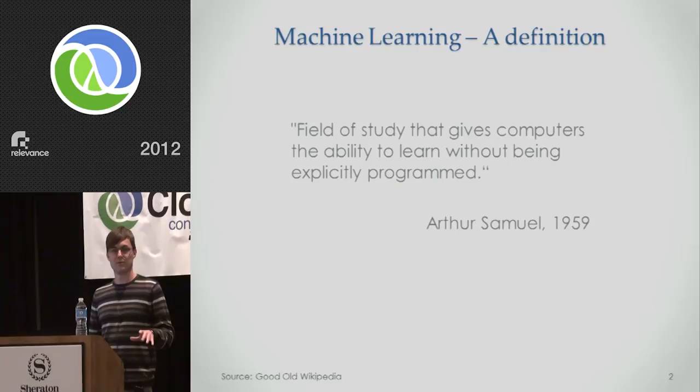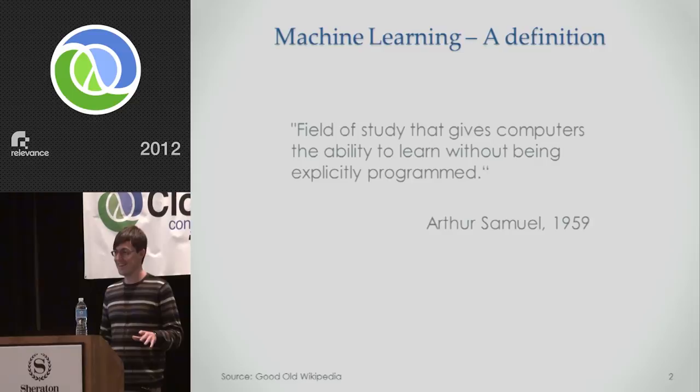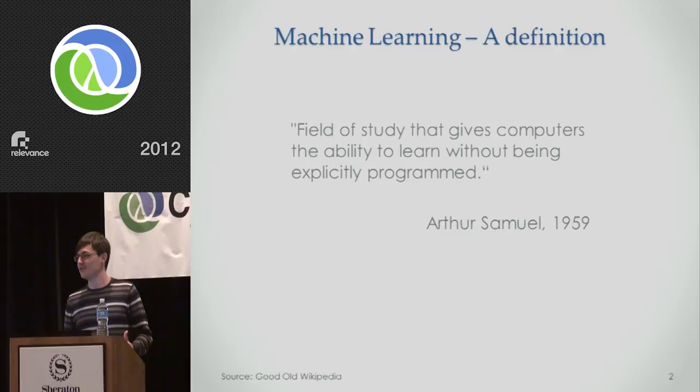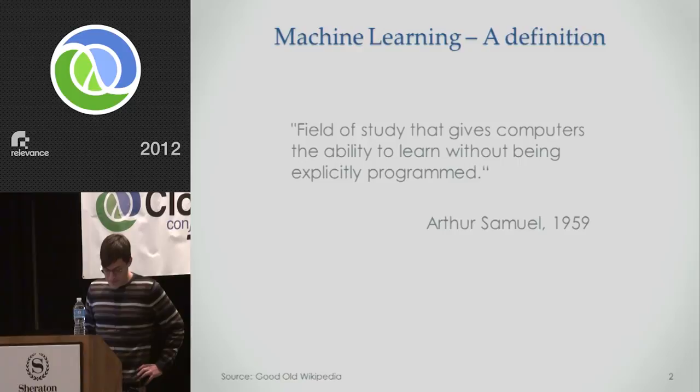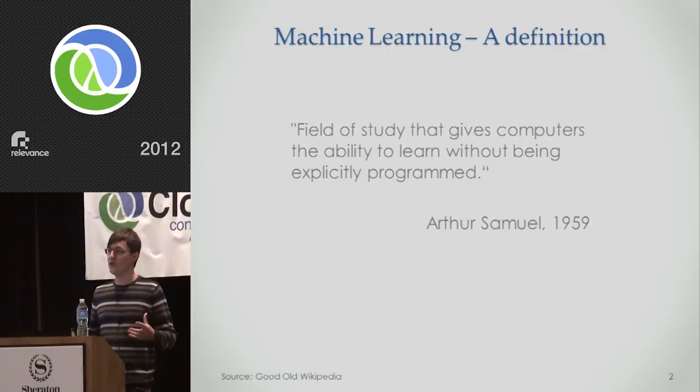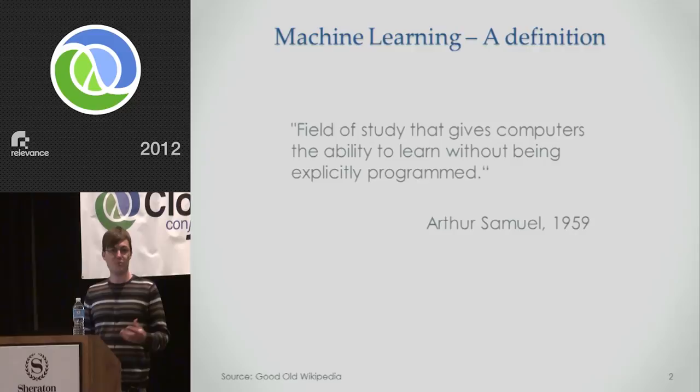There is actually one big problem with this definition, though. Can anyone see what it is? It's a circular definition. They use this word, learn, to describe machine learning. What kind of definition is that? And this learning thing is very interesting. What is learning? Learning is something which is so intuitive to us that we do it all the time without even thinking.